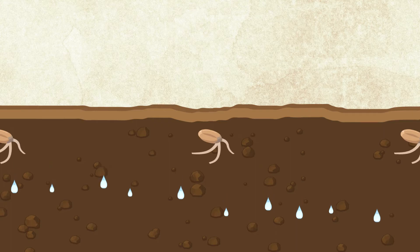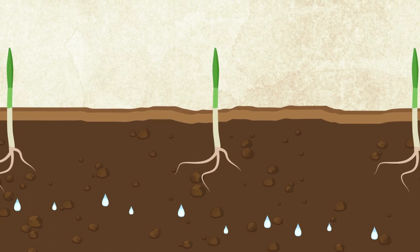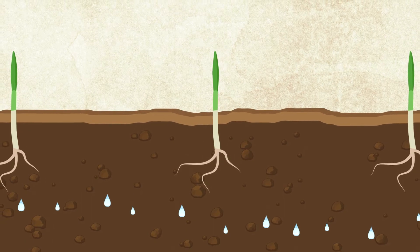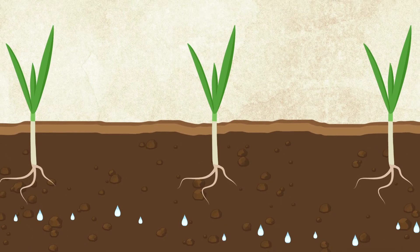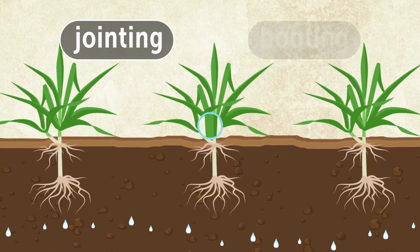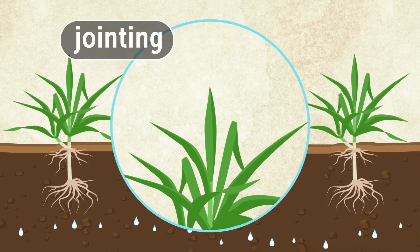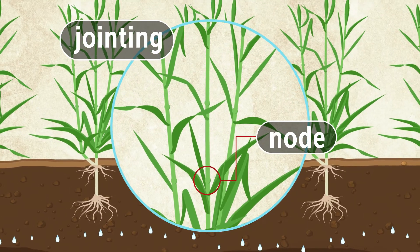Roots form and the first shoot, which is also called a tiller, grows up from the ground. The root's job is to feed the plant. They start to follow the moisture level further down into the soil. As the wheat plants continue to grow, they start the jointing and booting process. During jointing, the shoots continue to grow, forming nodes and eventually leaves.